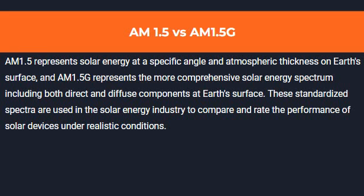AM1.5G represents the more comprehensive solar energy spectrum, including both direct and diffuse components at Earth's surface. These standardized spectra are used in the solar energy industry to compare and rate the performance of solar devices under realistic conditions.